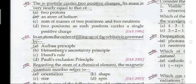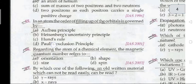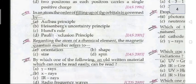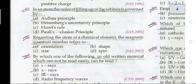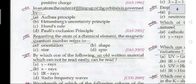Question 43: the constituent particles of a nucleus in an atom are proton and neutron. Question 44: the alpha particle carries two positive charges and its mass is very nearly equal to that of an atom of helium. Question 45: in an atom, the order of filling up of orbitals is governed by the Aufbau principle.